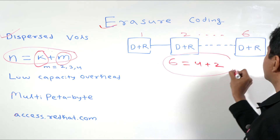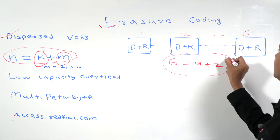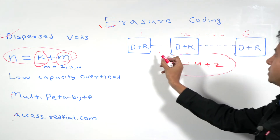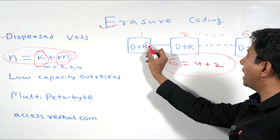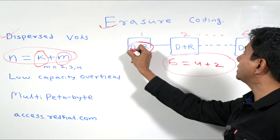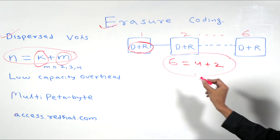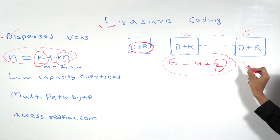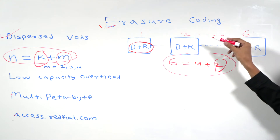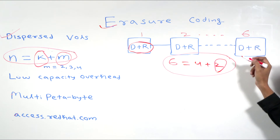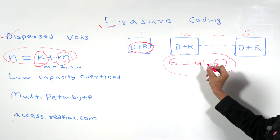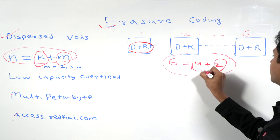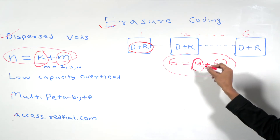This is a 6 equals 4 plus 2 configuration. We have 6 bricks and each of these 6 bricks have both data as well as redundancy information. Any 2 bricks can go down — up to 2 bricks can go down — and we can reconstruct the data from the surviving 4 bricks.